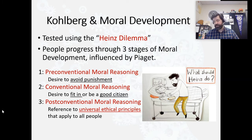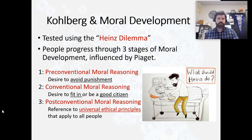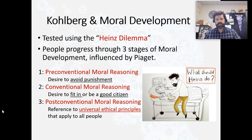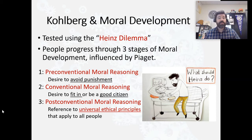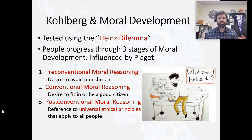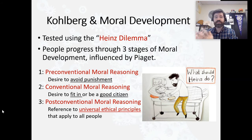A middle schooler might say Heinz should steal the drug, and when asked why, they reply: it's his job to protect his wife — that's what a husband does, and society won't look down on him for protecting his family. That's conventional moral reasoning; the focus is on his role as a husband. Or they might say Heinz shouldn't steal because stealing is wrong — it's against the law. The focus is not on getting in trouble, which would be pre-conventional, but simply that stealing is wrong. When facing an exam question, read carefully: is the focus on fitting into society or on avoiding punishment? That distinction can be tricky.